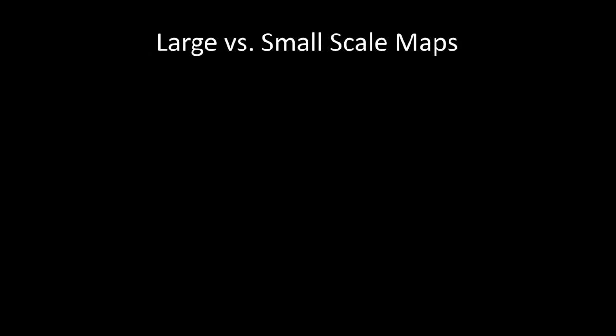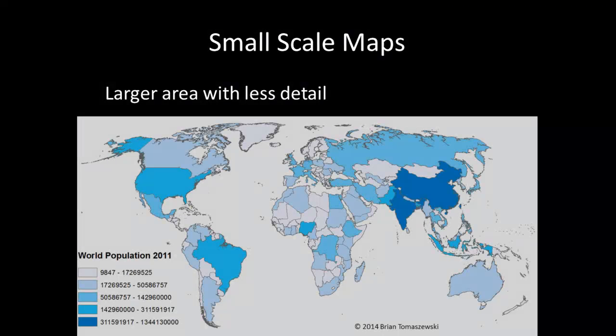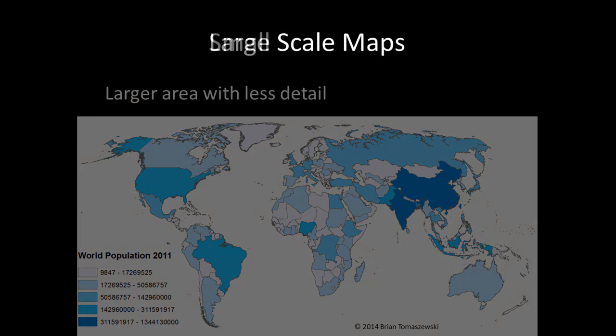It is important to develop a vocabulary around core mapping terminology. Large-scale and small-scale maps are important terms you should understand. Small-scale maps show a larger area with less detail. For example, a map of the entire world at a scale of 1 to 30 million printed on an 8.5 by 11 inch paper would be considered a small-scale map.